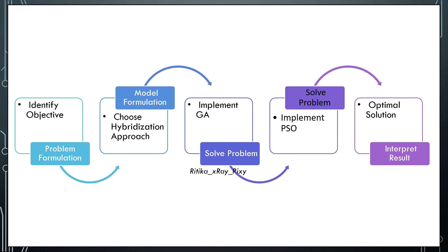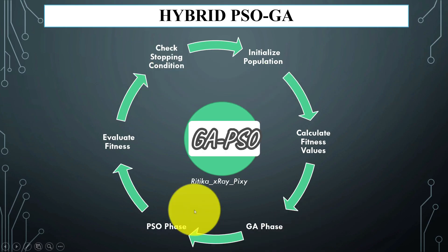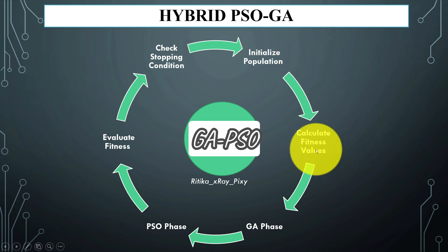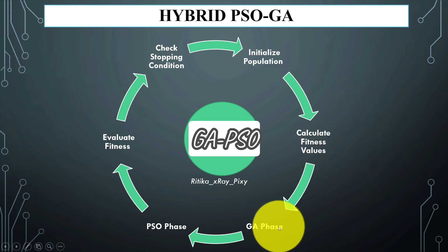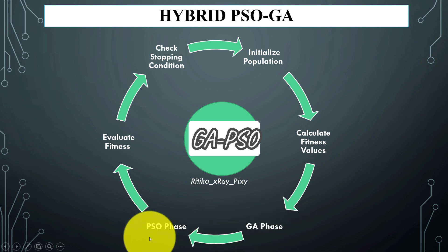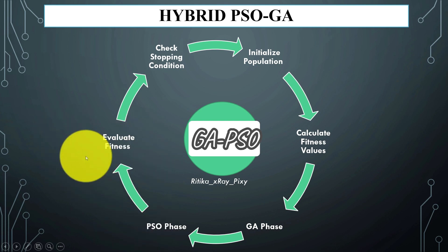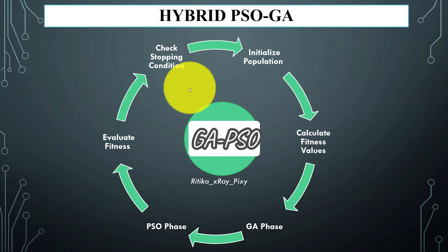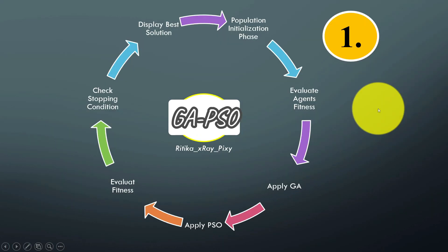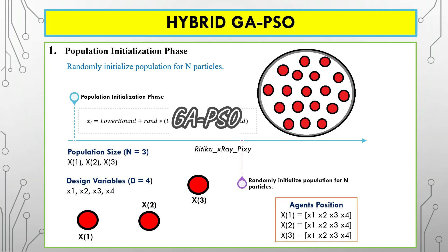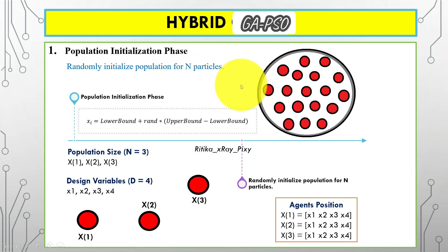Finally, we display the optimal solution and interpret the results to determine if the solution is feasible and meets the requirements. The process flow is: initialize the population, calculate the fitness value for each agent, perform the genetic algorithm phase, then the PSO phase, evaluate the new solution fitness values, check the stopping condition, and display the best solution found.